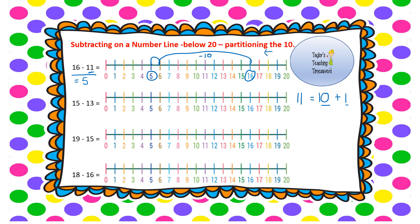Next: 15 take away 13. Start on 15. Partition 13 into a 10 and a 3 — you can write that at the side to help you see more clearly. Jump back 10 spaces from 15, which takes me to 5. Now jump back 3 more spaces: 1, 2, 3. I've landed on 2, so 15 take away 13 equals 2.